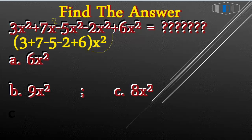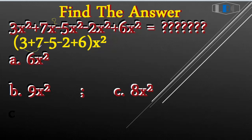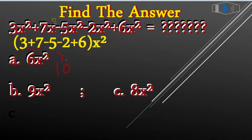Now we can merge everything since they all share x². We put all the coefficients together: 3 plus 1 plus 1 plus 1 equals... and then we subtract: 10 minus 5.